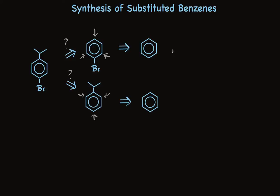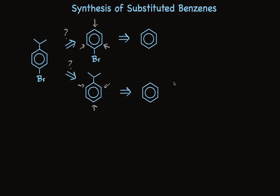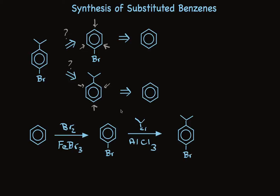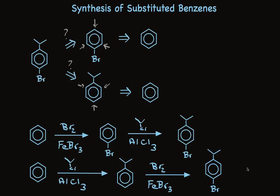Either of these precursors is okay, so now we ask ourselves: can these be made from benzene? Absolutely — so both options are feasible. We have two synthetic routes. Bromine with ferric bromide puts bromine on the ring, and isopropyl chloride puts the alkyl group on using aluminum chloride as the catalyst — this is the Friedel-Crafts alkylation. Or we could do these in the opposite order: alkylate benzene to make isopropylbenzene, then brominate to make the product. Sometimes there are two synthetic routes that work.